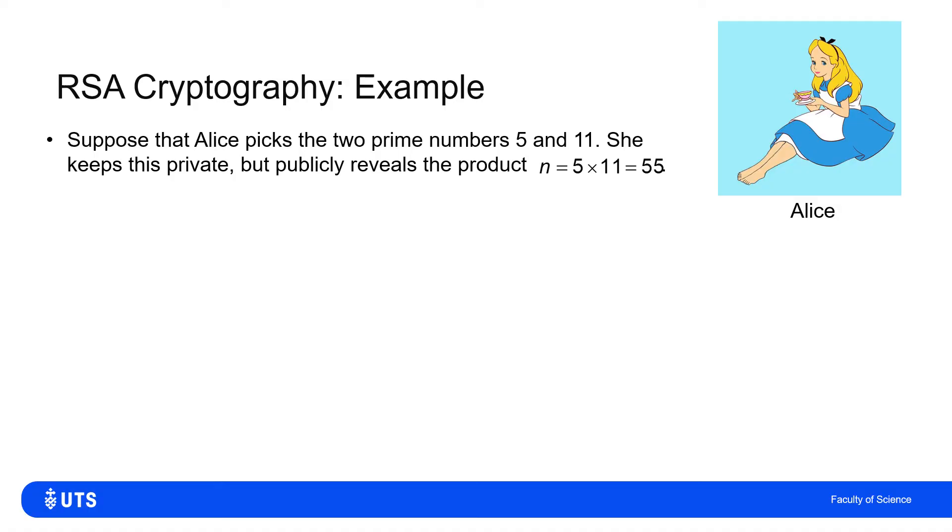Obviously, in reality, a lot of people could look at 55 and figure out which two prime numbers it's the product of, 5 and 11.